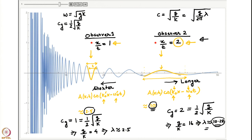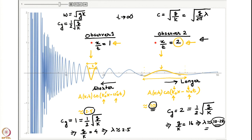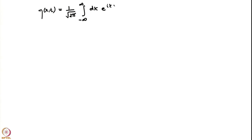To understand why this works, we need to go back to our expressions and work on them more carefully. Note that these conclusions about what the observer observes are valid as time gets larger and larger. Our solution to the Cauchy-Poisson problem is always expressible as an inverse Fourier integral of a standard form.